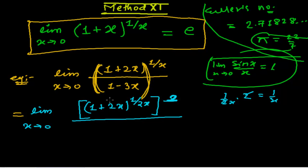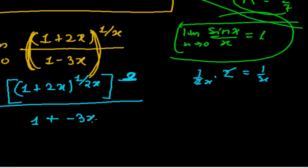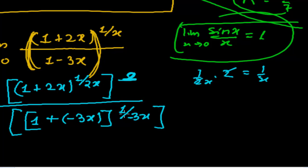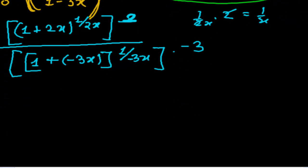In the denominator, I do the same thing. It is (1 + (−3x)) whole to the power 1/(−3x). It was only 1/x originally, so I put minus 3 in, and therefore I multiply by minus 3 — raising that base to the power minus 3.